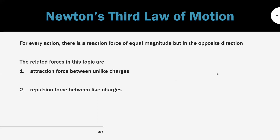Next, we're going to revise Newton's Third Law of Motion — that every action has a reaction force of equal magnitude but in the opposite direction. In this topic, we are studying the electrostatic force exerted on charges. The first case is unlike charges: one positive and one negative charge. The positive charge is attracted to the negative charge, and the negative charge also experiences an attraction force of equal magnitude but in the opposite direction. So both charges are attracted toward each other and move to the center.